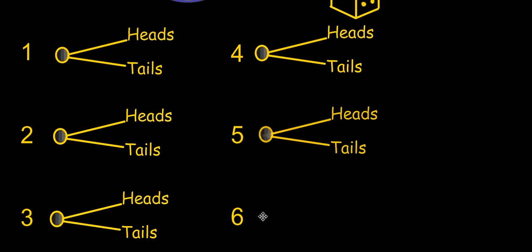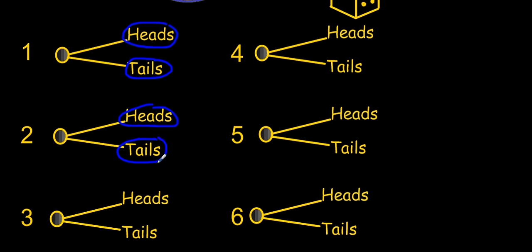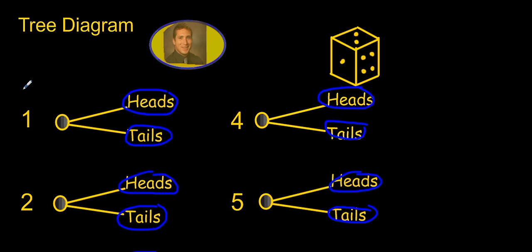And now we can go through and actually count the number of possible outcomes. We could have a 1 in heads, that's 1 outcome. 1 in tails, 2 outcomes. 2 in heads, 3 outcomes. 2 in tails is 4 outcomes. And I'm going to continue. 5, 6, 7, 8, 9, 10, 11, 12 possible outcomes. And that's how you draw a tree diagram to determine the number of possible outcomes.